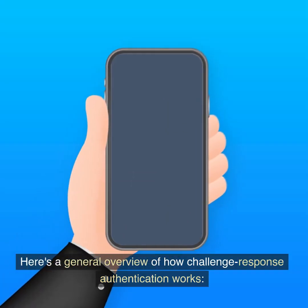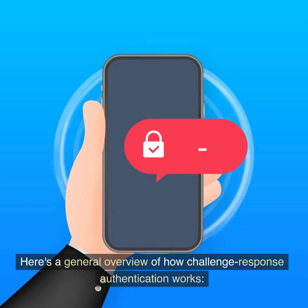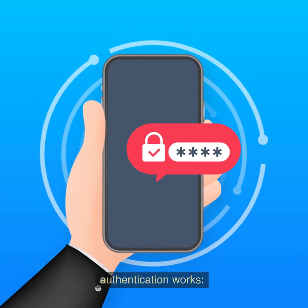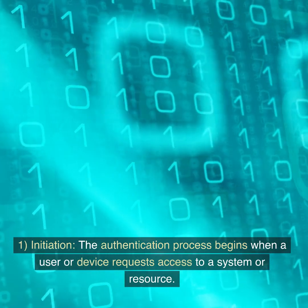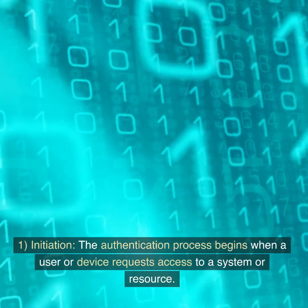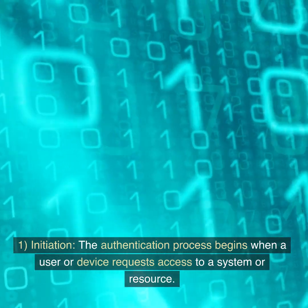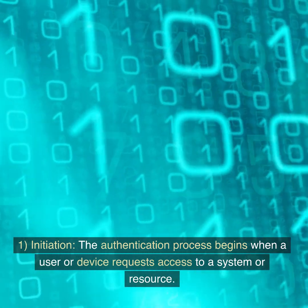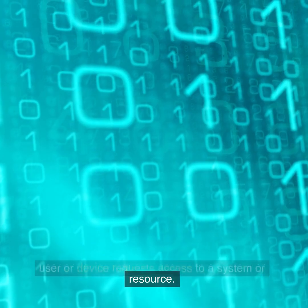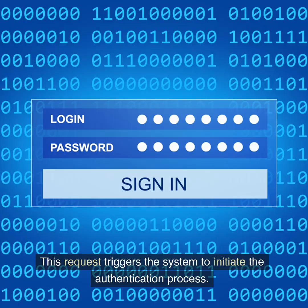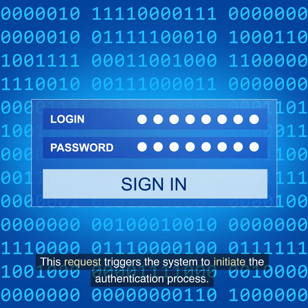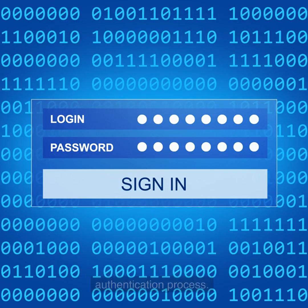Here's a general overview of how challenge-response authentication works. Step 1: Initiation. The authentication process begins when a user or device requests access to a system or resource. This request triggers the system to initiate the authentication process.